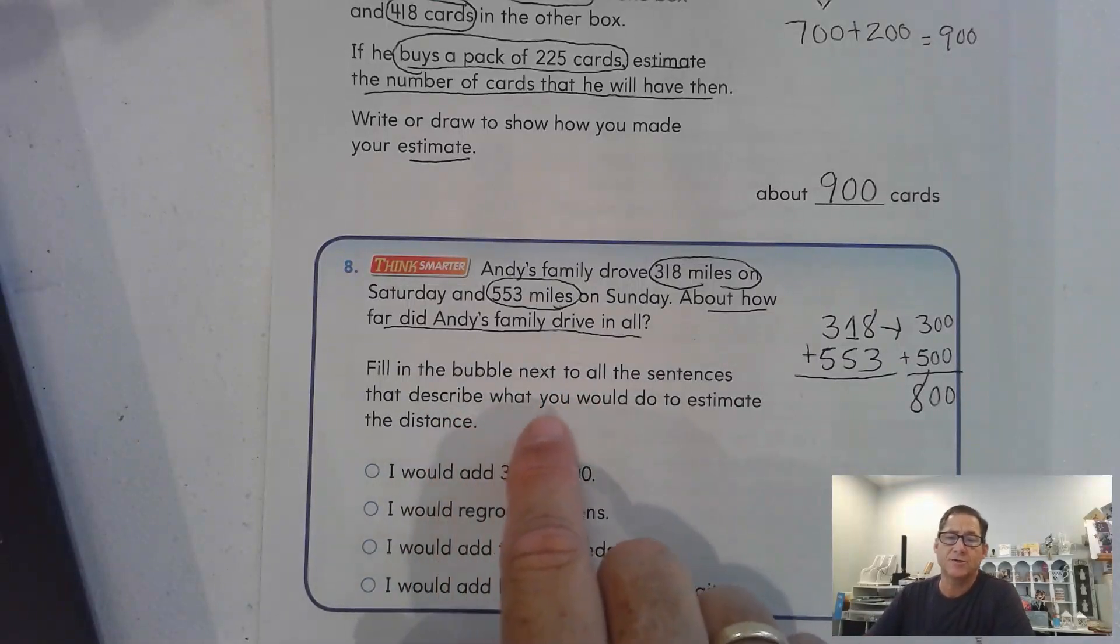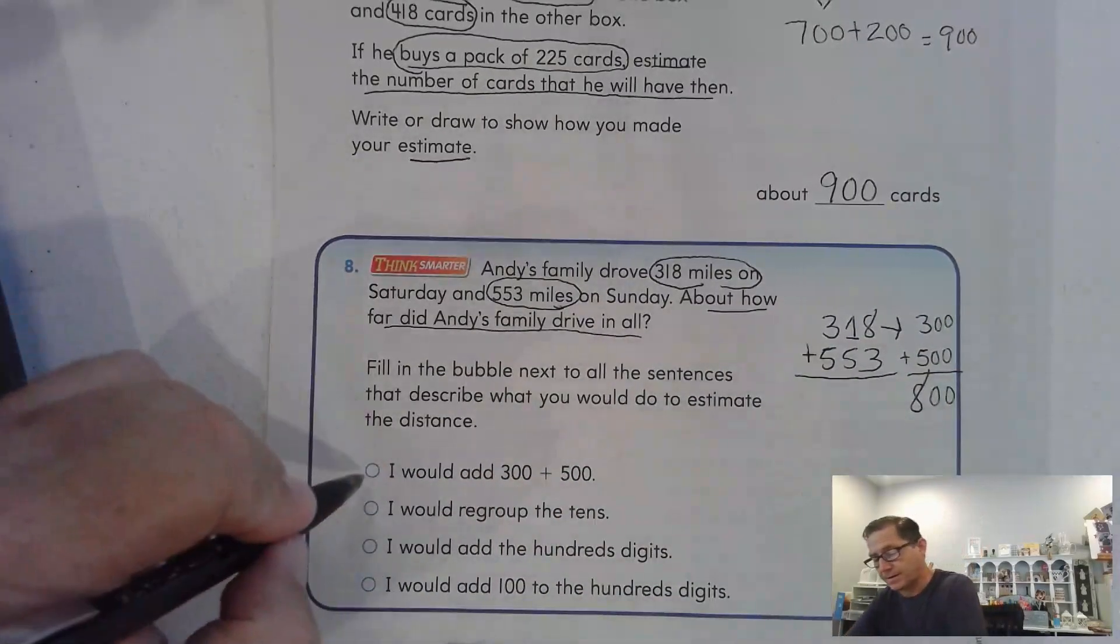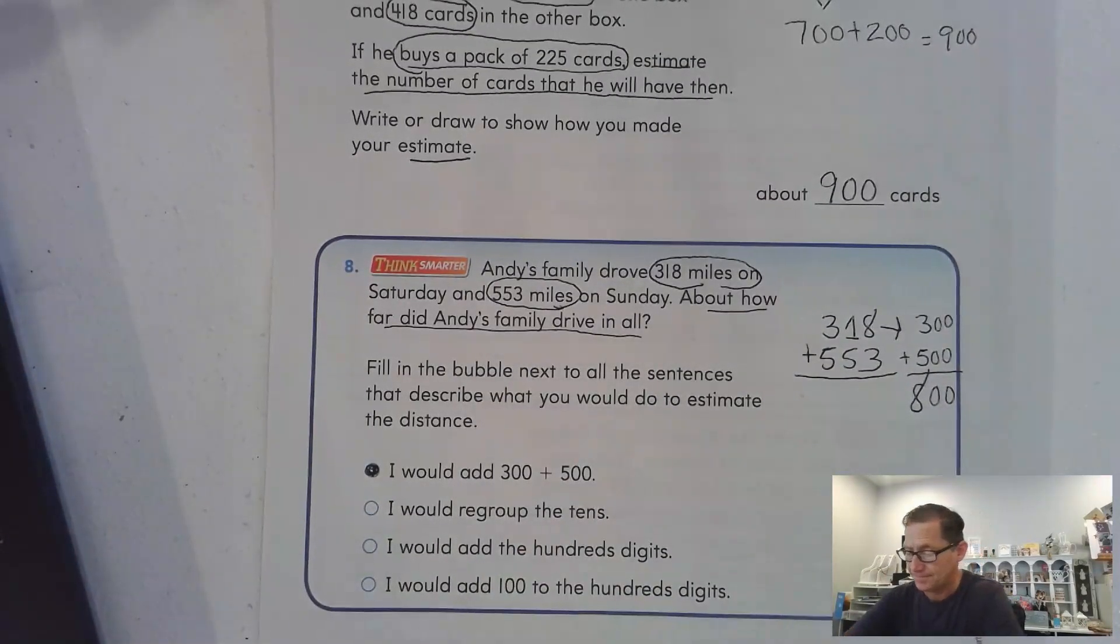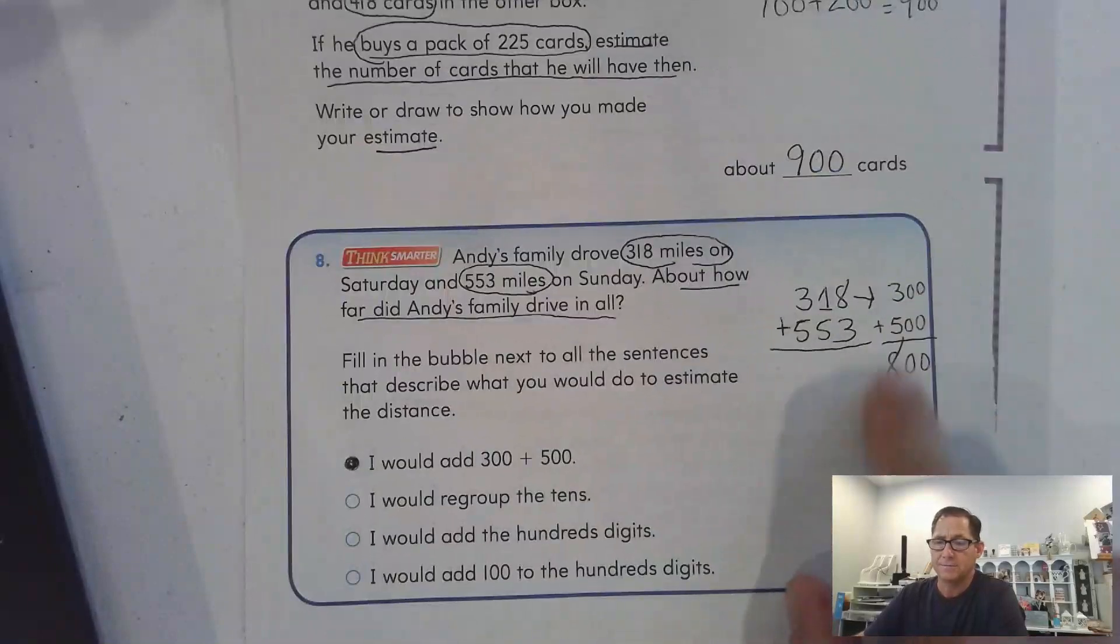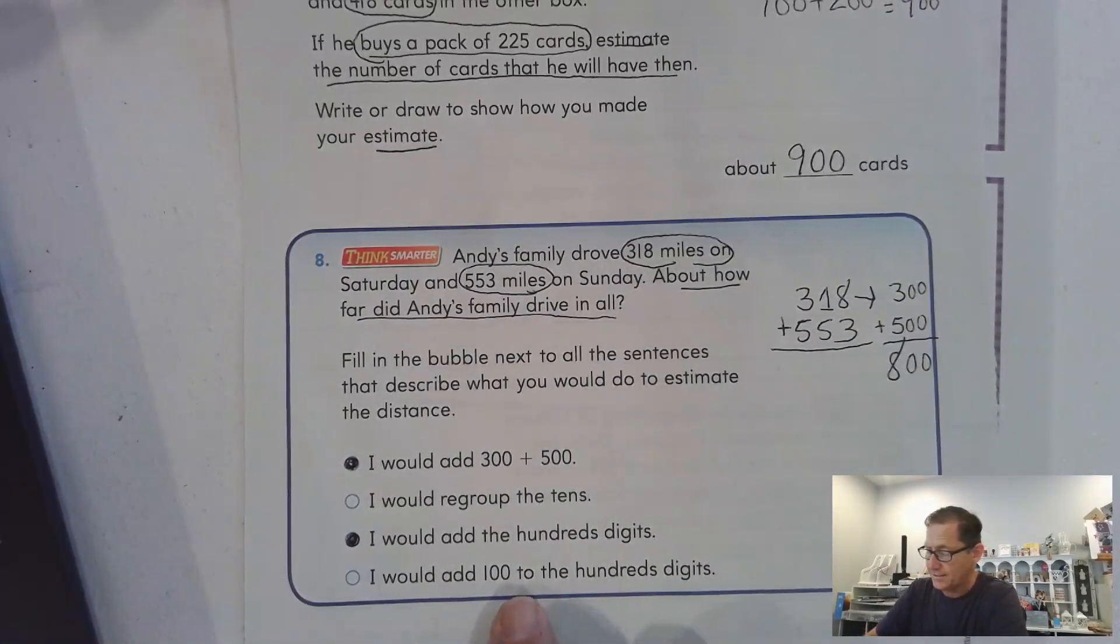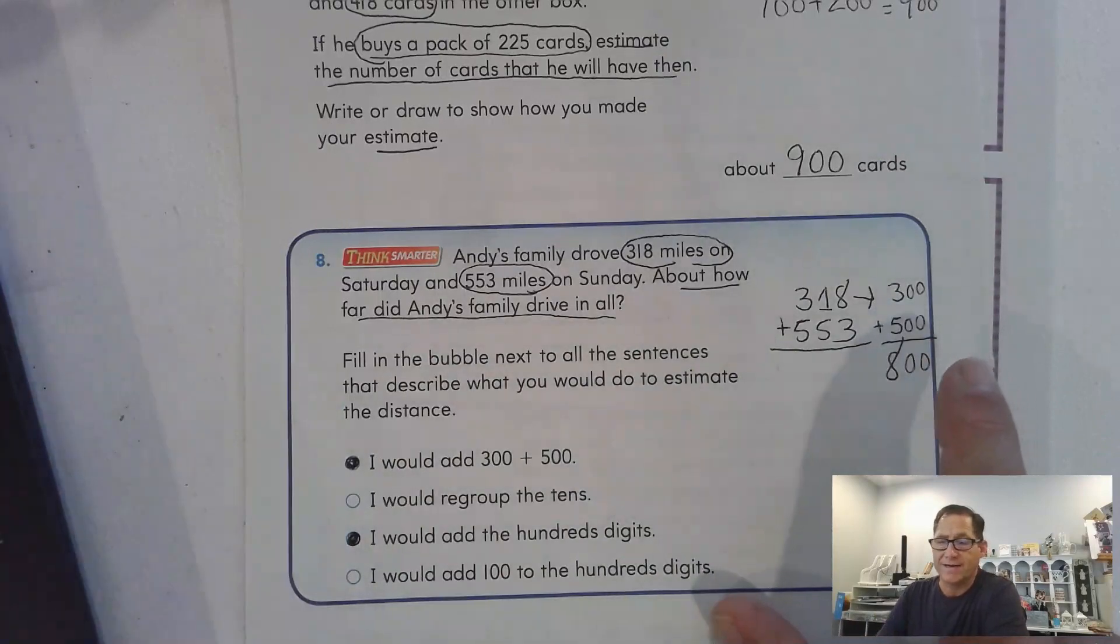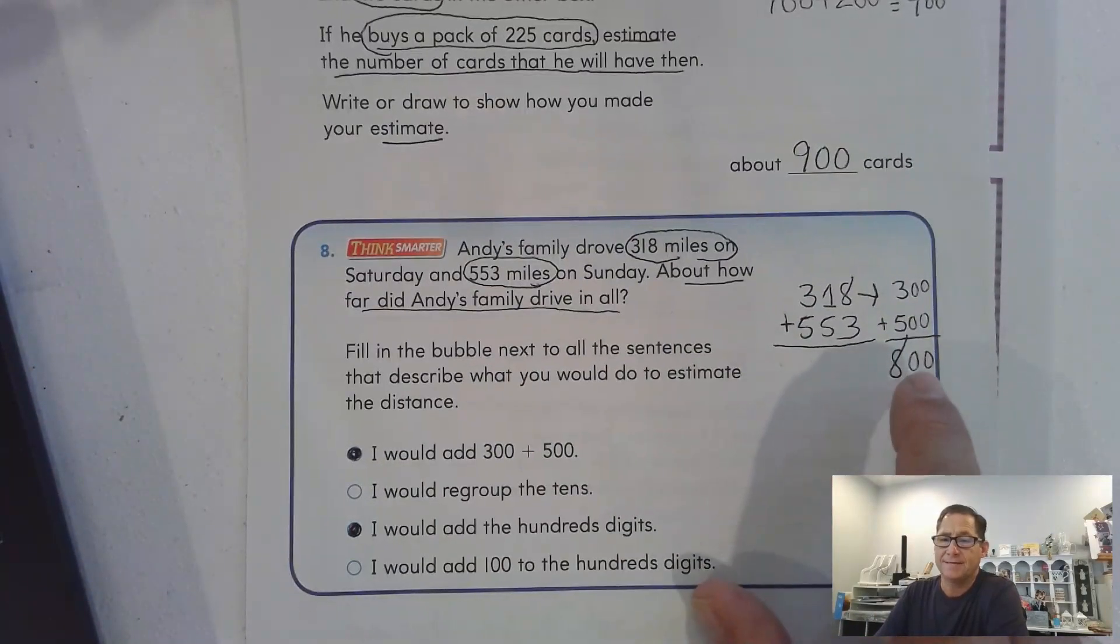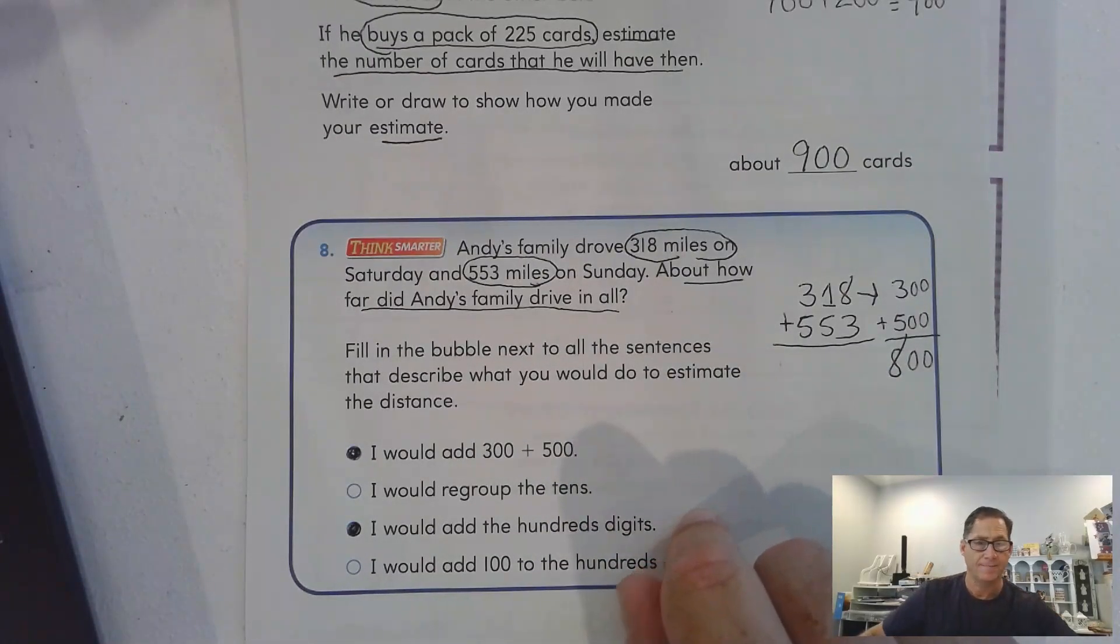So, fill in the bubble next to all the sentences that describe what you would do to estimate the distance. I would add 300 plus 500. Yeah, that's what we did. I would regroup the tens. No. Because we're finding about how many. There aren't any tens. I would add the hundreds digits. Yeah. 300 and 500. We're adding the hundreds digits. I would add 100 to the hundreds digit. No. Because that would require regrouping. We're not regrouping anything. So, when we estimate, we're having numbers that typically will not involve regrouping. So, 300 plus 500. And we added the hundreds digits.